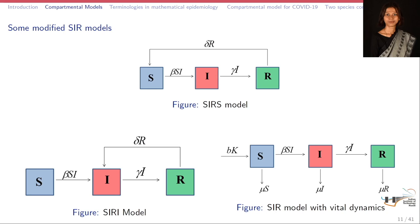There are some modified forms of SIR models. The first one is the SIS model — it is the same as the SIR model except there is one extra arrow showing that individuals from the recovered class go back to the susceptible class at the rate delta, meaning they again become susceptible to the disease after recovery. Another modified form is the SIR model where there is movement from the recovered class to the infected class again at the rate delta. When we consider the SIR model with vital dynamics, we consider the death rate of each compartment: minus mu S, mu I, and mu R, which is the natural death rate.